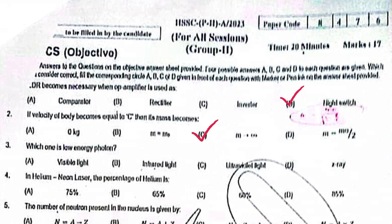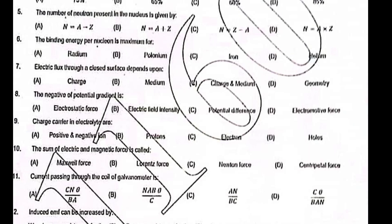energy photon: ultraviolet light. In helium neon laser, the percentage of helium is 85 percent. The number of neutrons present in the nucleus is given by N equal to A minus Z. The binding energy per nucleon is maximum for